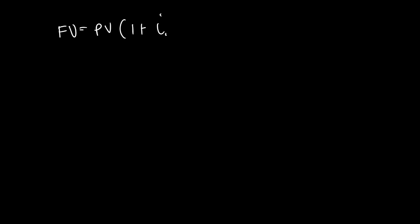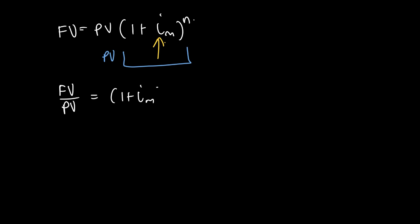We have the compound interest formula (1 + i/m)^n. Now we want to make i the subject of the formula. The first thing we do is get rid of the PV that's multiplied by the bracket — we divide through by PV. So we get: FV / PV = (1 + i/m)^n. That's step one.